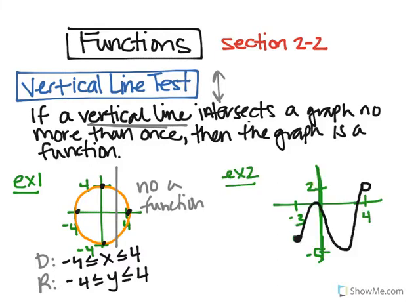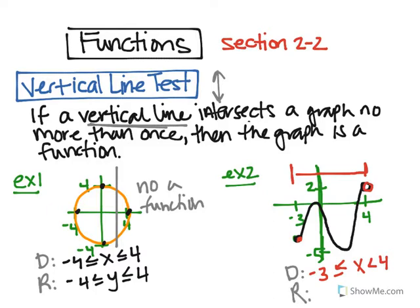In the second example, let's start with finding the domain and range. The domain is all possible x values, so the x extends from negative 3 — and it equals negative 3, since this is a closed dot — all the way to positive 4, but not equaling it, since positive 4 has an open dot. The range is how tall it is on the y-axis. It ranges from negative 5 all the way to positive 2, where it equals negative 5 but is less than positive 2 since it's an open circle.